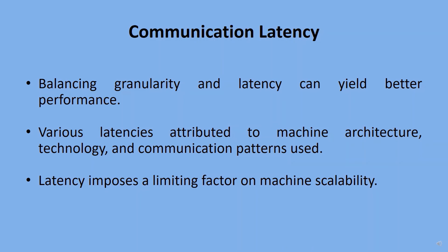Inter-processor communication latency is another important parameter for a system designer to minimize. Along with signal delays, it is also affected by the communication pattern involved. For example, n tasks communicating with each other may require n×(n−1)/2 communication links. Thus, the complexity grows quadratically, leading to a communication bound that limits the number of processors in the system.